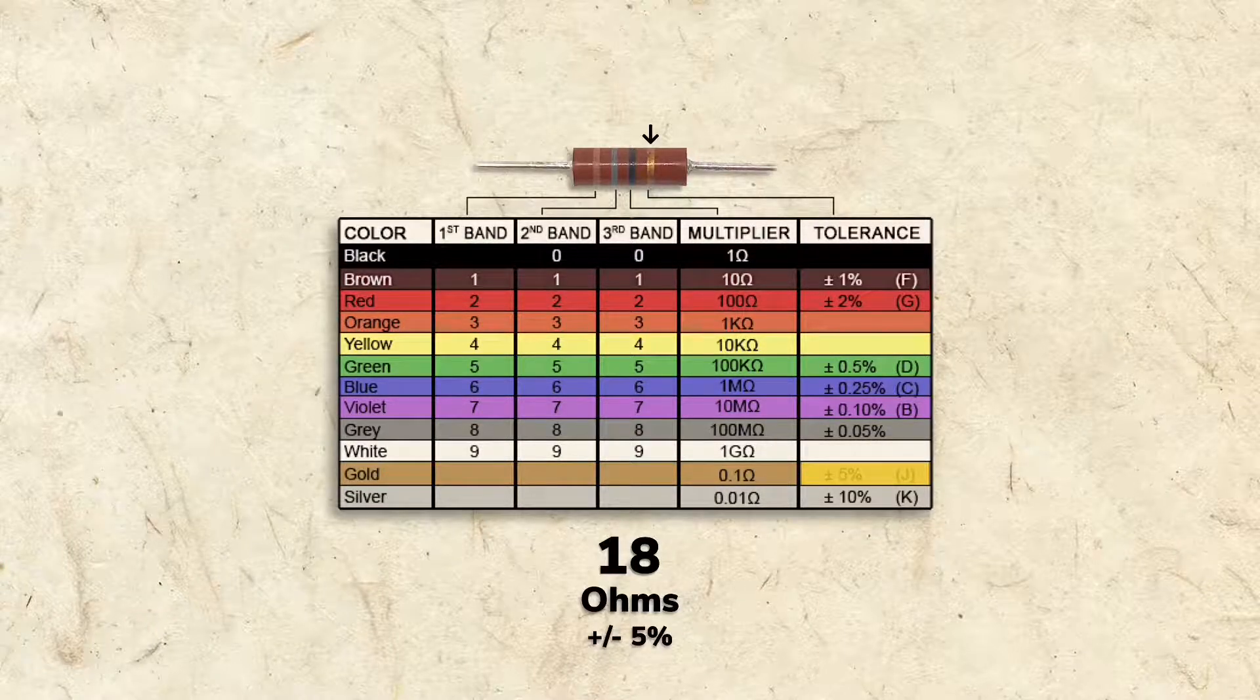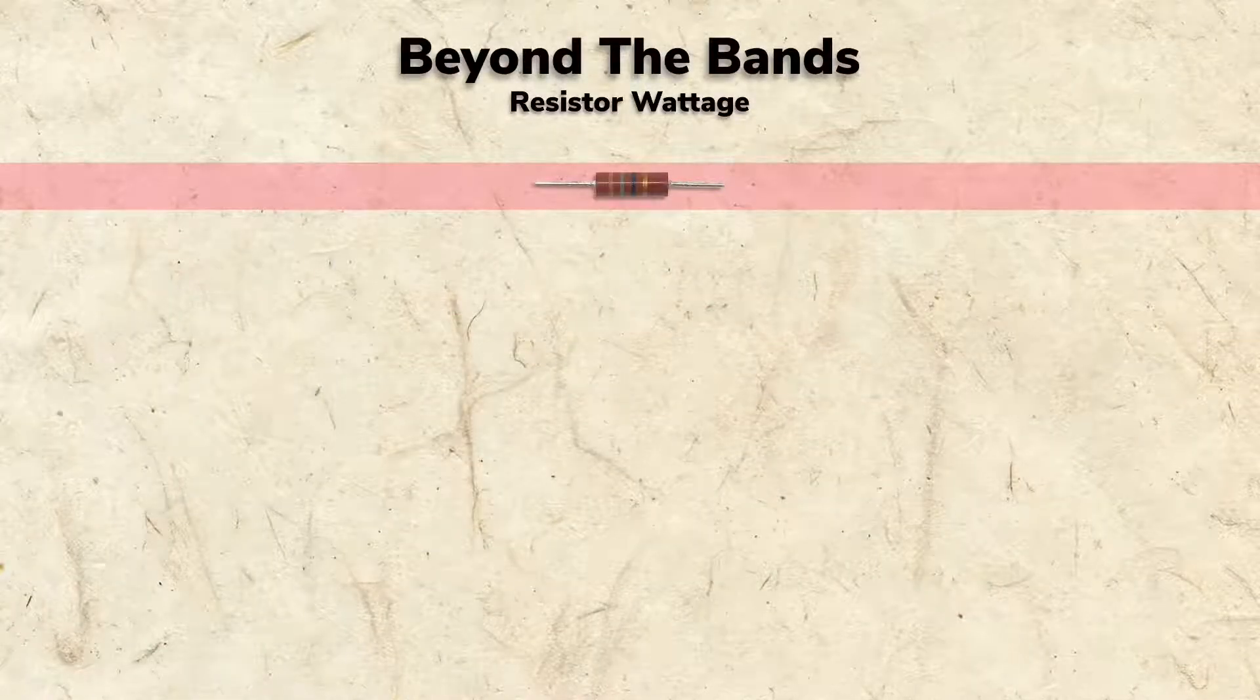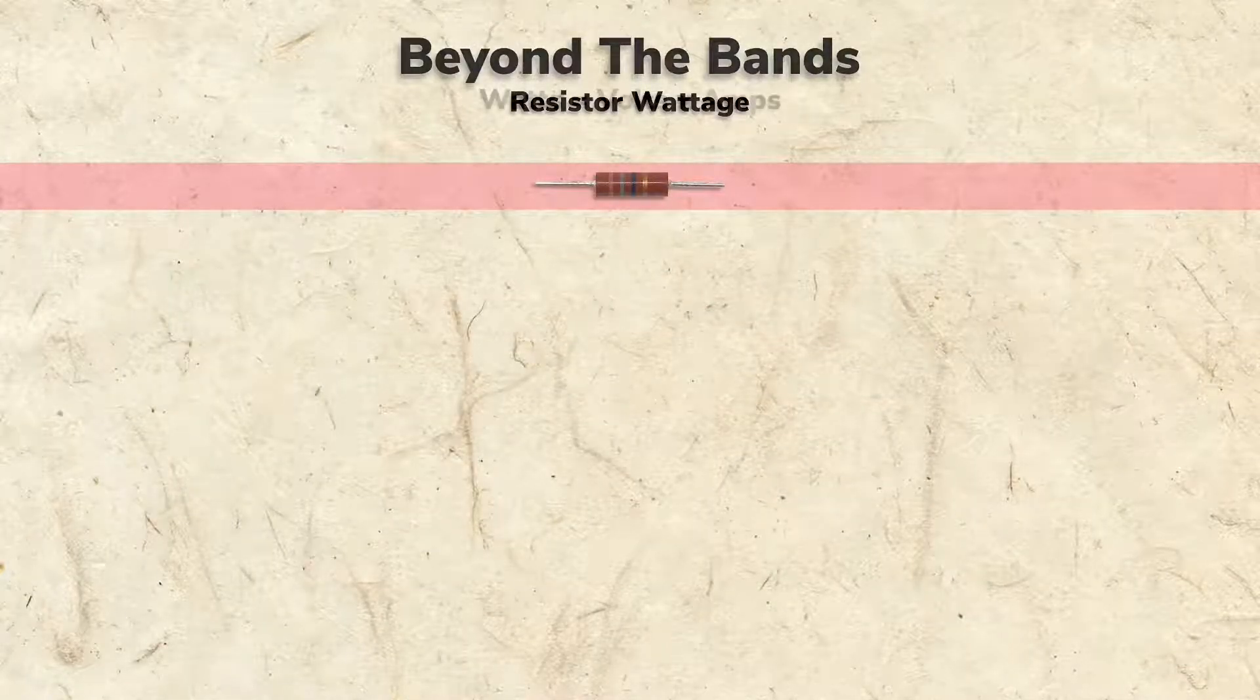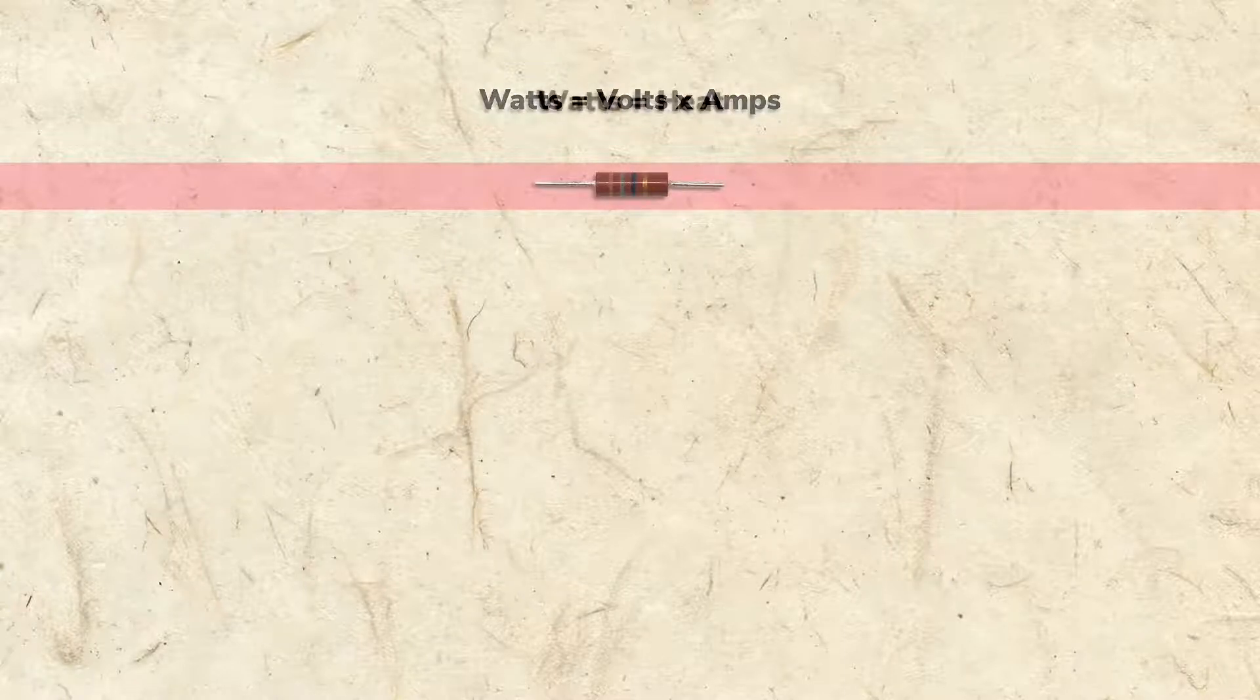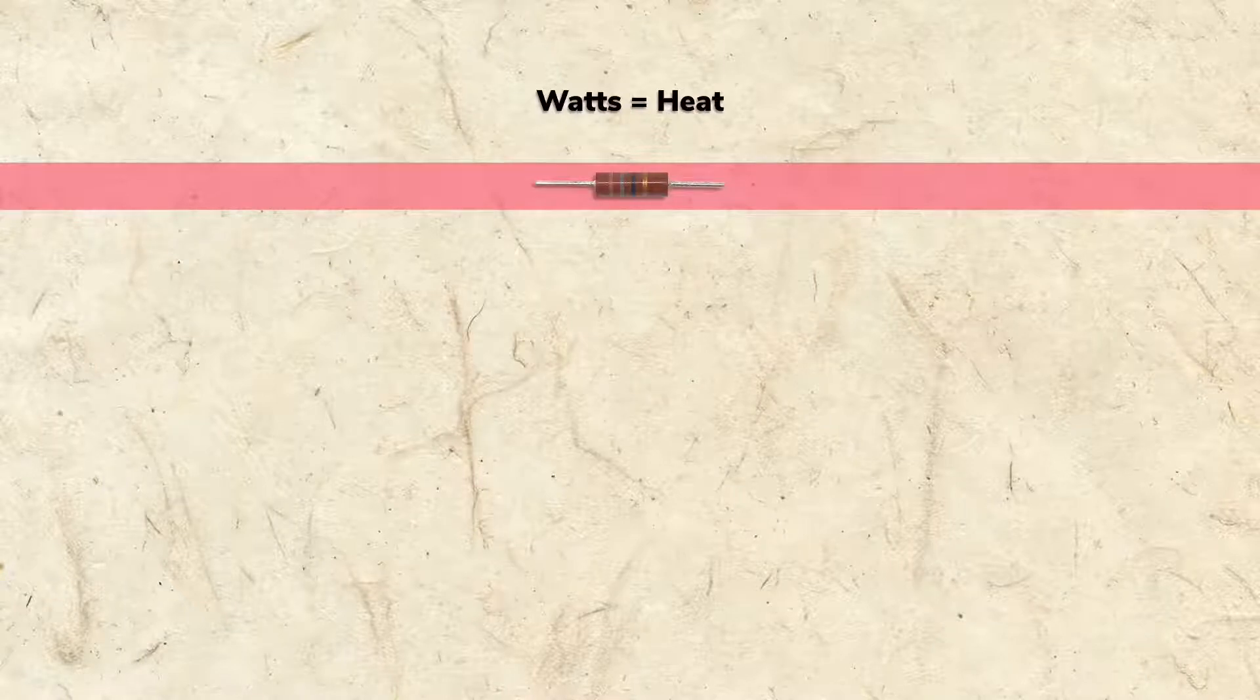In addition to ohms, resistors are sized by watts. As we've learned, watts equals volts times amps. Watts also equals heat, because as electricity flows through a resistor, heat is always generated.